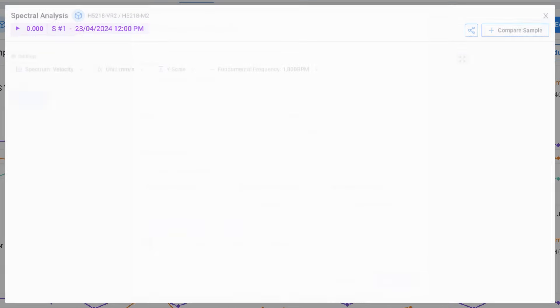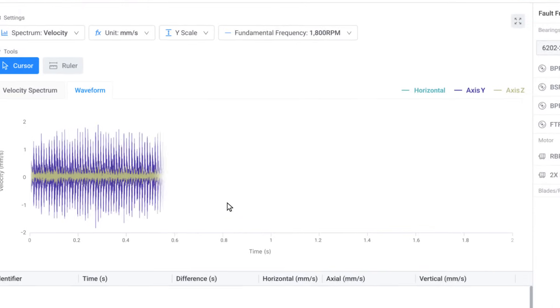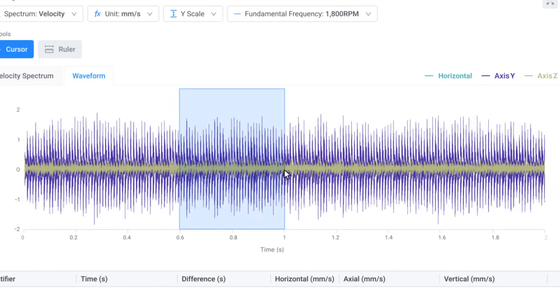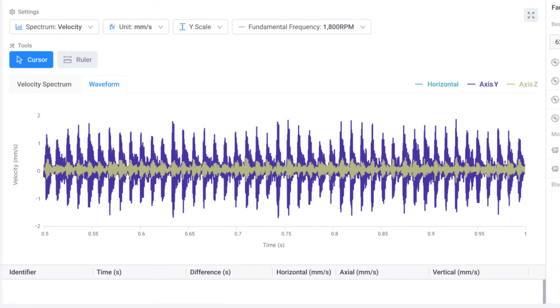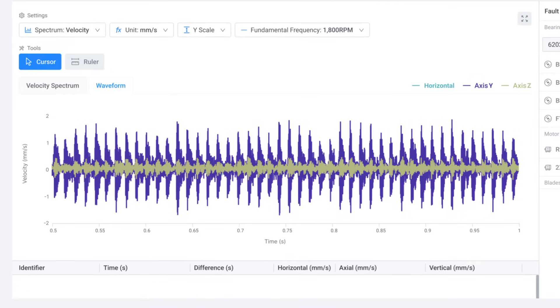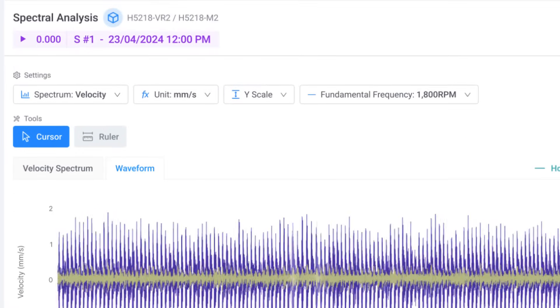Once data is sampled and it's back on the platform, we can start to play with these frequencies. For example, for a bearing, each of these peaks will represent the bearing rolling elements hitting it and making sounds. You can hear this sound by clicking the play button.